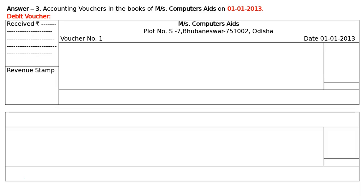And in the right side we will have the date, that is 1st January 2013 — the date of the drawing of the voucher. We will have to write down the amount and rupee symbol in the amount column.